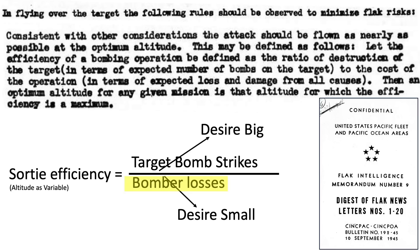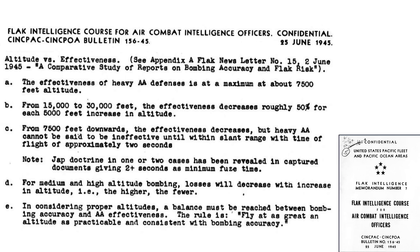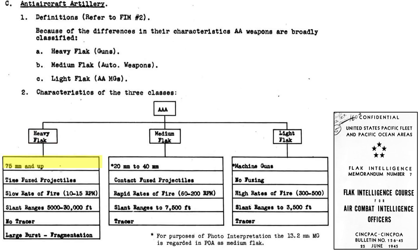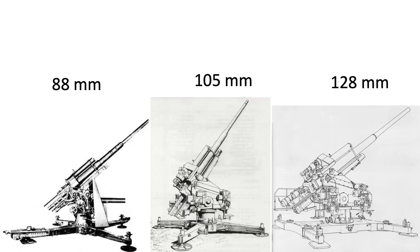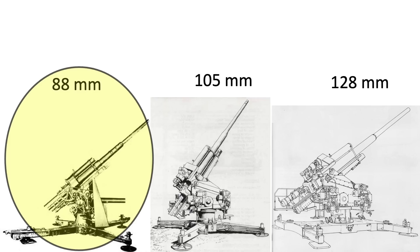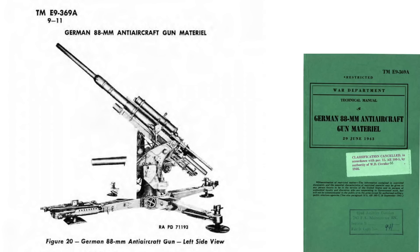Bomber loss rates from flak are strongly dependent on the attack altitude. A June 1945 CINPAC document titled Flak Intelligence Course for Air Combat Intelligence Officers aligns rules of thumb regarding the relationship between bomber altitude and flak effectiveness. Heavy AA flak guns are most effective at altitudes around 7,500 feet. Heavy flak guns are defined as 75 millimeter caliber size and up. The projectiles are time-fused, have a slow rate of fire, no tracers, and cause damage by burst fragmentation.